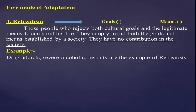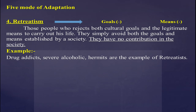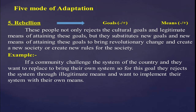So to summarize: conformity — societal goals are accepted and achieved positively through a legal way. Innovation — they have societal goals but achieve them through illegal means. Ritualism — they do not have high cultural goals, living a simple life in a dead-end job, not showing progress. Retreatism — no goals and no legal means, with no contribution to society.